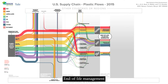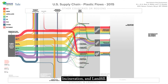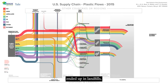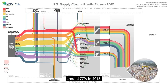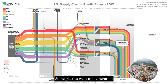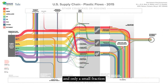End-of-life management options for plastics are recycling, incineration, and landfill. The large majority of plastics ended up in landfills — around 77% in 2015. Some plastics went to incineration, and only a small fraction was collected as recyclables.